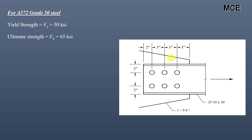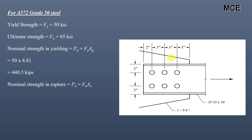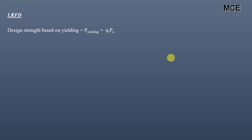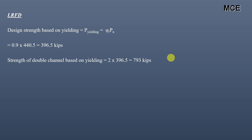For A572 Grade 50 steel, yield strength Fy = 50 ksi and ultimate strength Fu = 65 ksi. Nominal strength in yielding for one channel section = Fy × Ag = 50 × 8.81 = 440.5 kips. LRFD design strength based on yielding = 0.9 × 440.5 = 396.5 kips. Strength of double channel based on yielding = 2 × 396.5 = 793 kips.